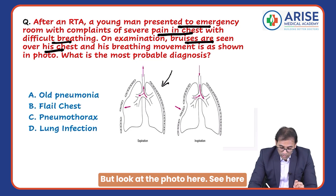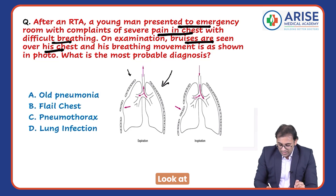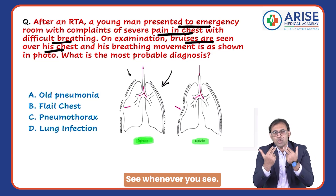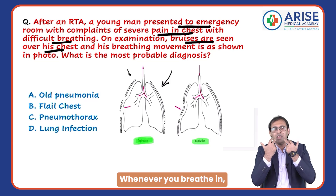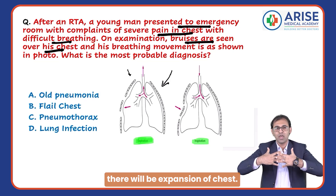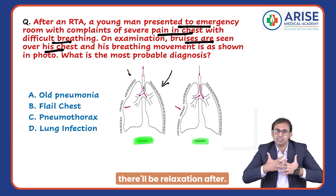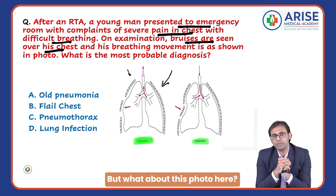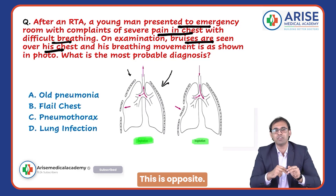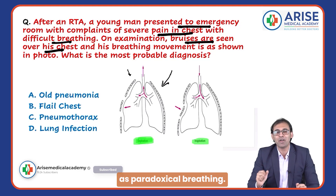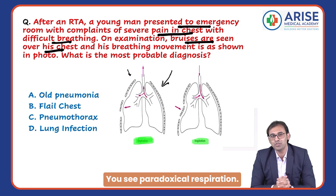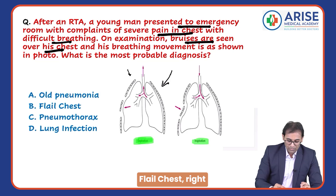Look at inspiration and expiration. Whenever you breathe in, there will be expansion of chest; whenever you breathe out, there will be relaxation — this is normal breathing. But in this photo, it is the opposite. This is called paradoxical breathing or paradoxical respiration.